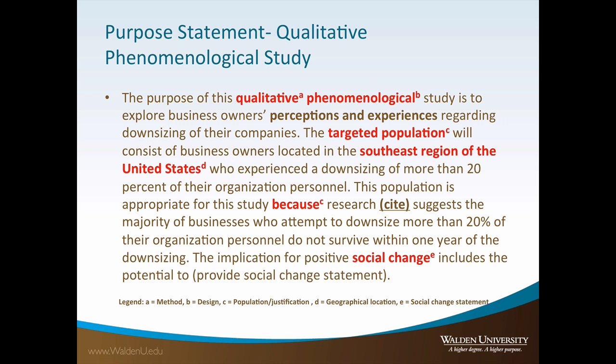Please take a moment to review the qualitative phenomenological purpose statement example. A lettered subscript is provided where the corresponding rubric element is presented. Variables are not included in this example because qualitative studies do not incorporate variables. This example does not exceed 250 words and contains the five required elements. You will want to ensure your purpose statement follows this roadmap as it maps directly to the rubric.